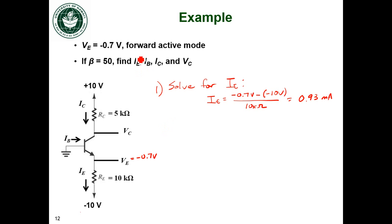So we solved for emitter current. Now let's solve for base current. Since I'm in forward active mode, I know that I can use this relationship to determine my base current based on my emitter current.